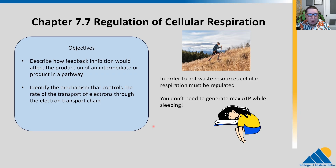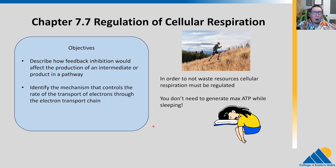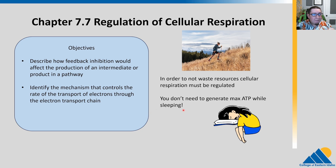In the final section of chapter seven, we're going to talk about the regulation of cellular respiration. We're not going to go too deep into this — your biochemistry course will cover all of this — but I want to talk about regulation in the context of why do it. We'll discuss feedback inhibition and identify places we can control, like the electron transport chain.